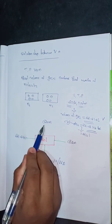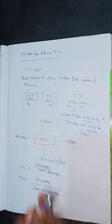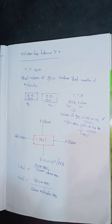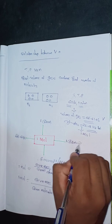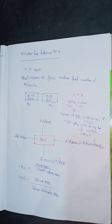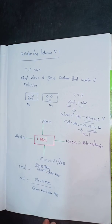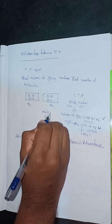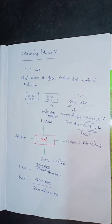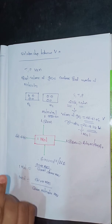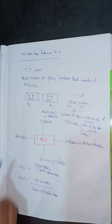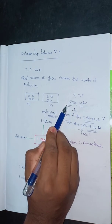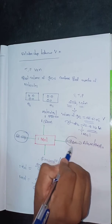1 GAM is 1 GM. 1 mole at STP occupies 22.414 L. That is why this value is important to remember by heart.